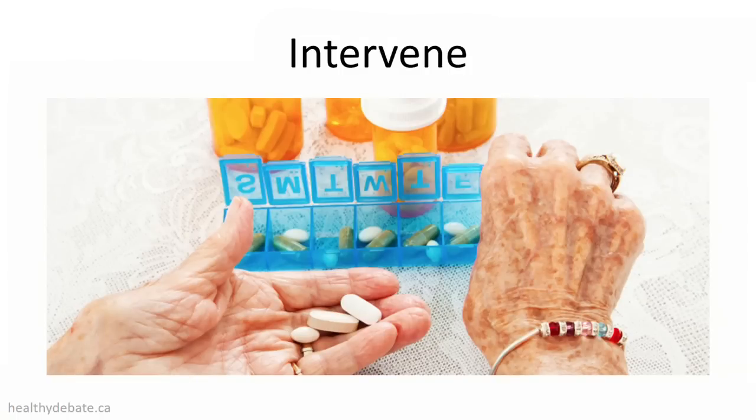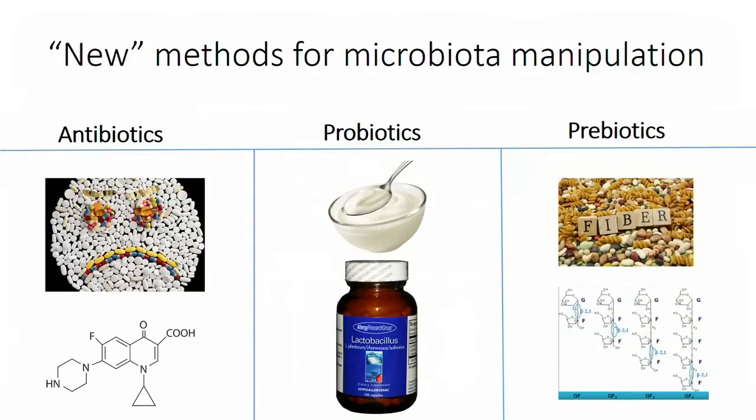Lastly, we try to intervene. Most people think about altering the microbiota by giving antibiotics, but we can also use live microbial therapies like probiotics, going all the way to fecal microbiota transplantation, as well as prebiotics — foods specifically eaten by certain microbes in our gut and not others. So I'll leave you with the concept of measuring, modeling, and intervening, and I'll come back to answer any questions. Thank you.